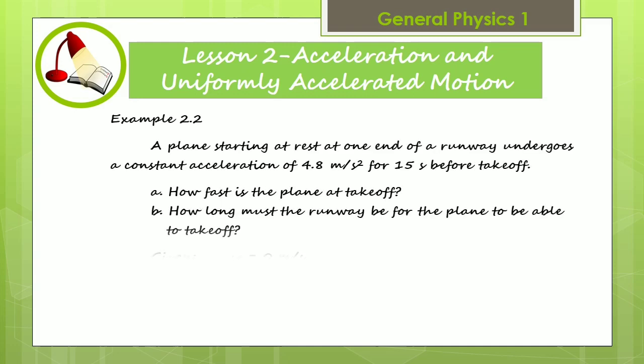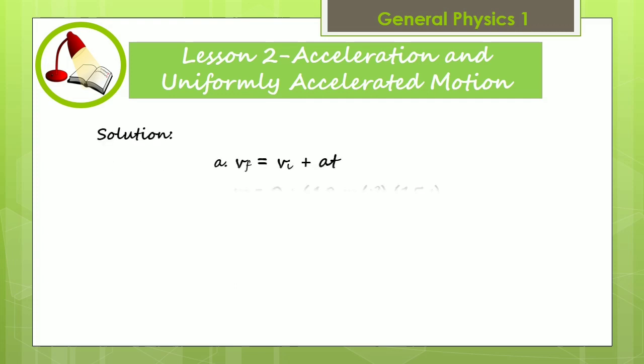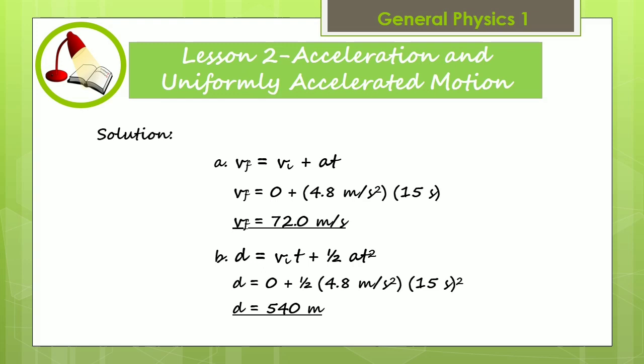Example 2: A plane starting at rest at one end of a runway undergoes a constant acceleration of 4.8 meter per second squared for 15 seconds before takeoff. How fast is the plane at takeoff? How long must the runway be for the plane to be able to take off?